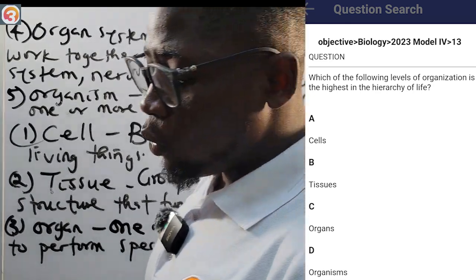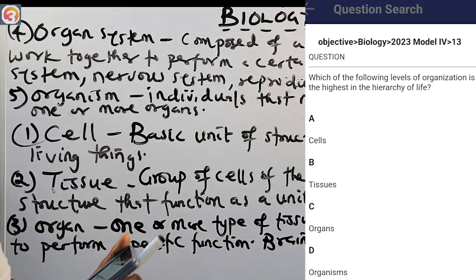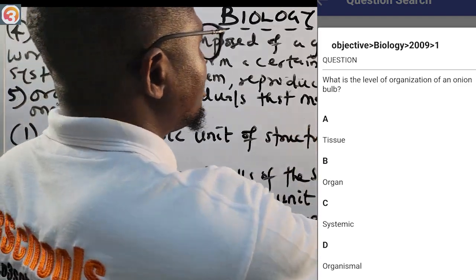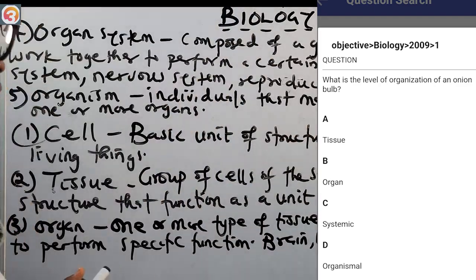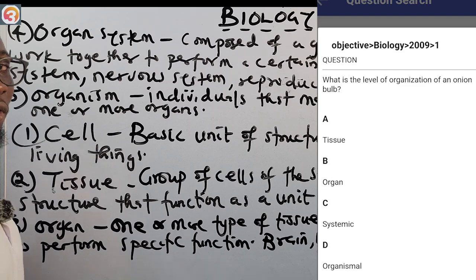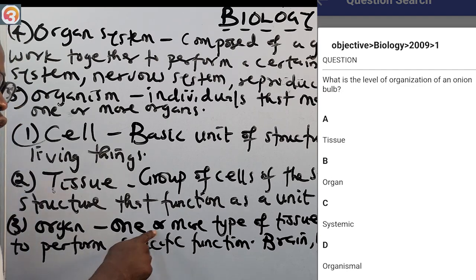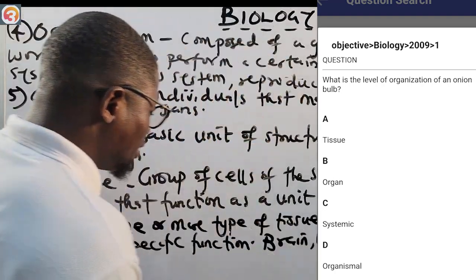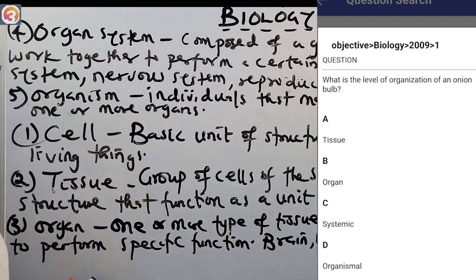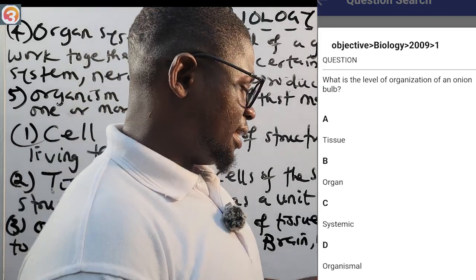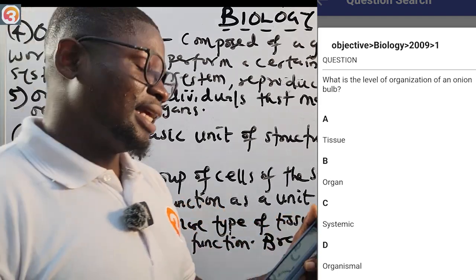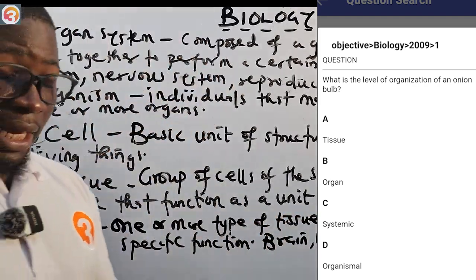2009 number 1: what is the level of organization of an onion bulb? We listed the onion bulb as one of the plant organs. An organ is one or more types of tissue working together to perform a specific function. The options are A — tissue, B — organ, C — systematic, D — organismal. The correct answer is B, organ level.